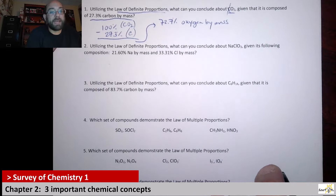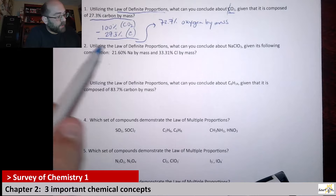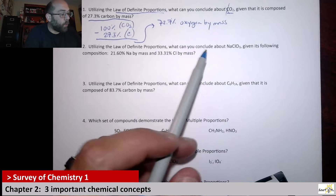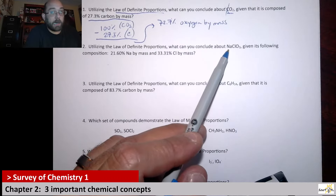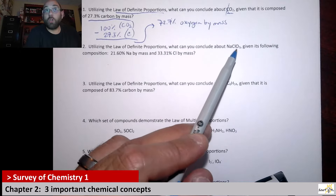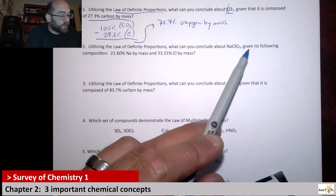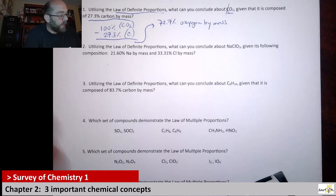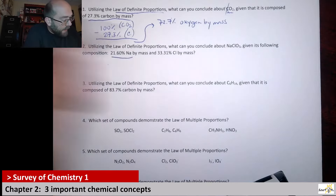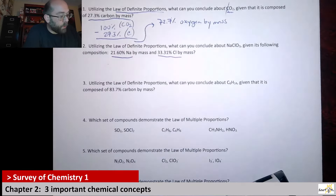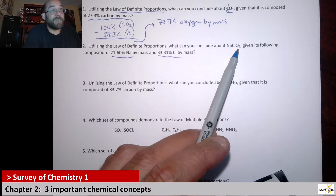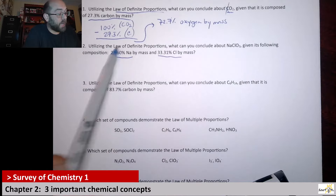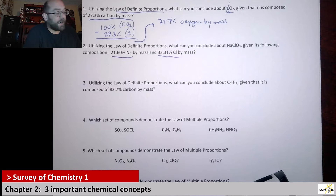Questions two and three repeat this idea. Question two says: utilizing the law of definite proportions, what can we conclude about NaClO3? That is sodium chlorate. We're given a composition of sodium by mass and a composition of chlorine by mass. Since we know sodium and chlorine, we can figure out oxygen using the law of definite proportions.